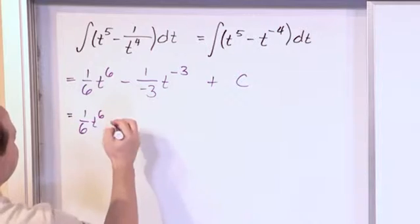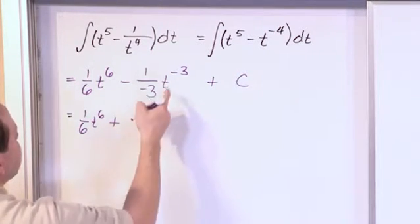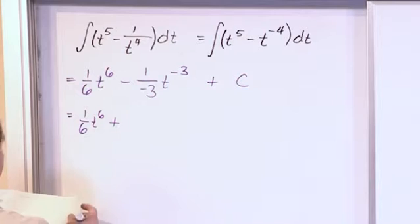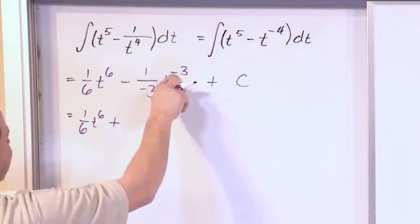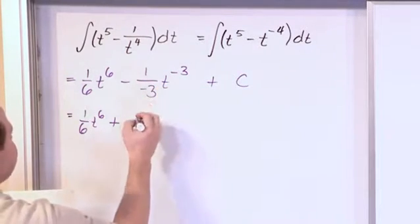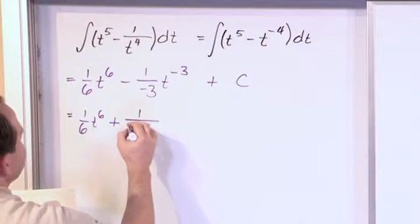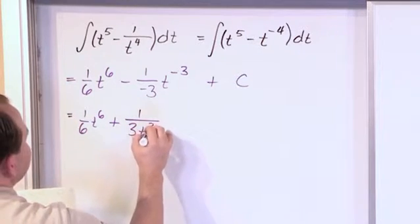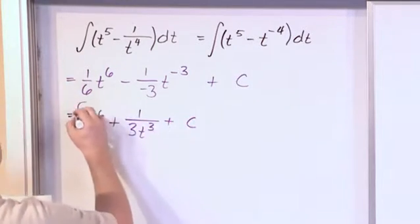This double negative gives you a positive. And then we have 1/3, but this t cubed, this negative t to the negative 3, can then be moved back downstairs if I want. 1 over 3t cubed plus a constant. And this is the answer.